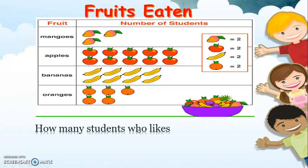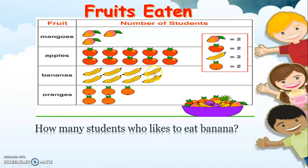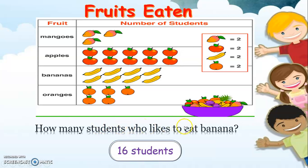How many students like to eat banana? As we see, the banana row shows each picture equals two. Counting by twos: two, four, six, eight, ten, twelve, fourteen, sixteen. There are sixteen students who like to eat banana. This column is showing the number of students.